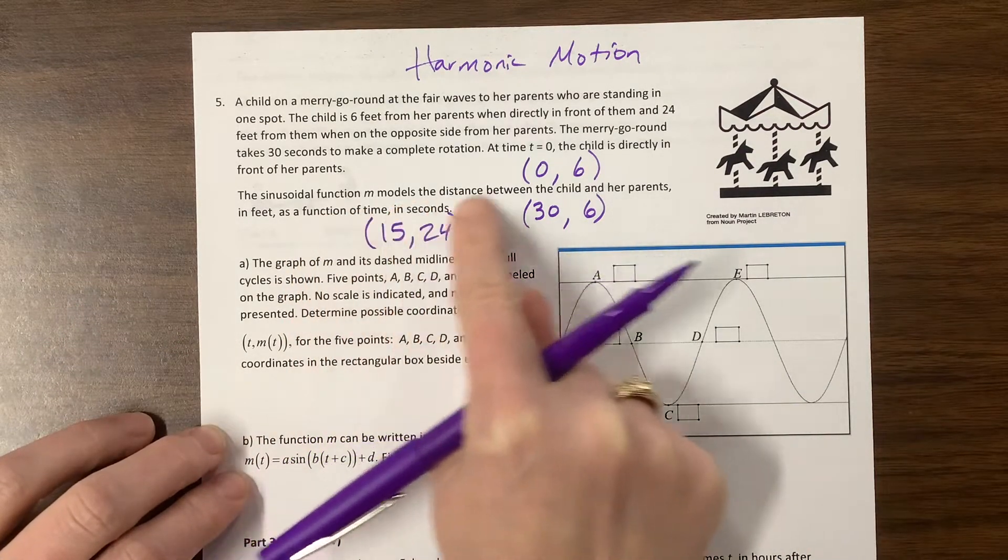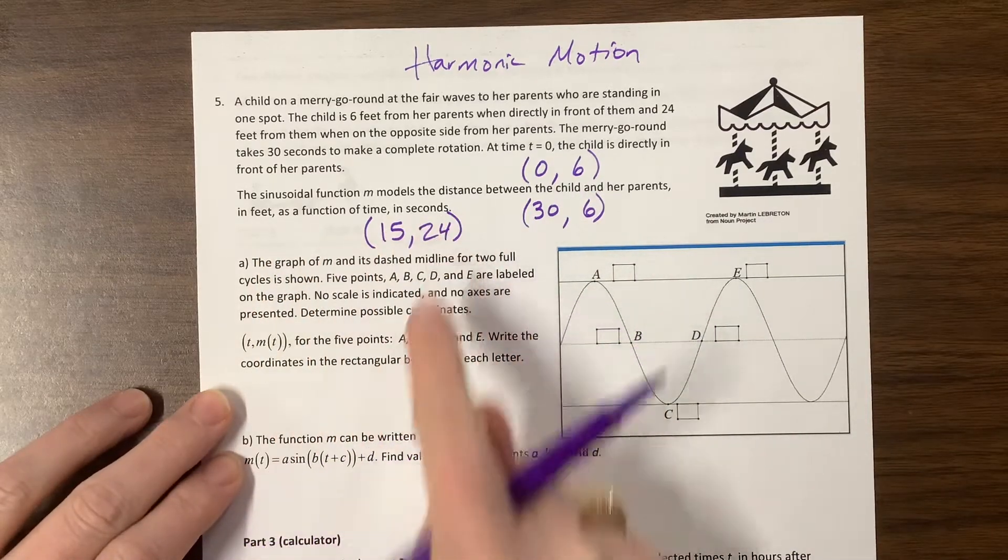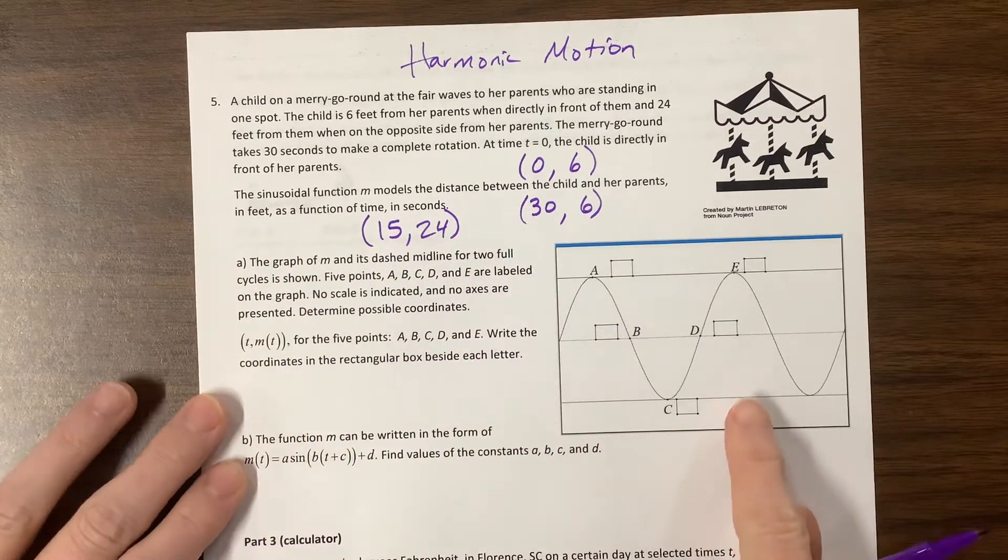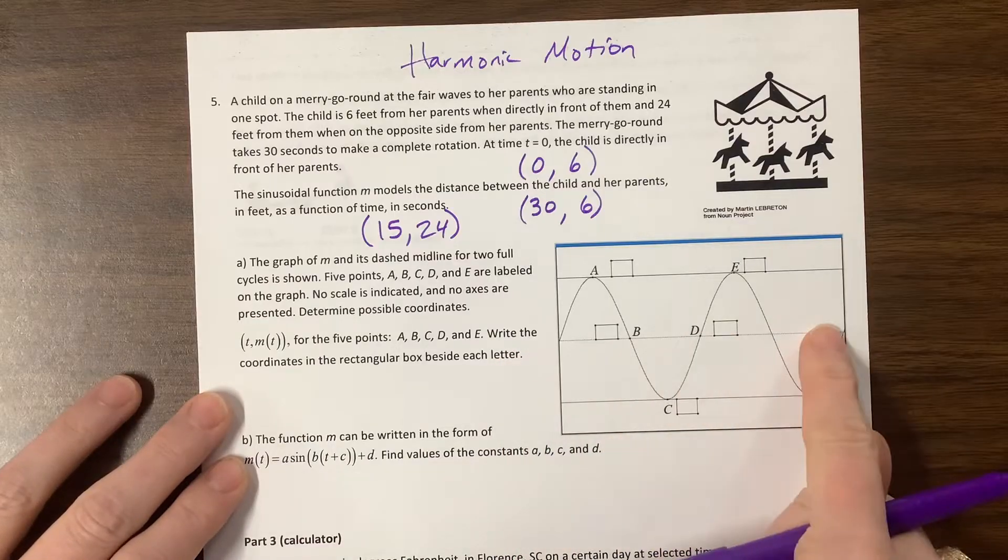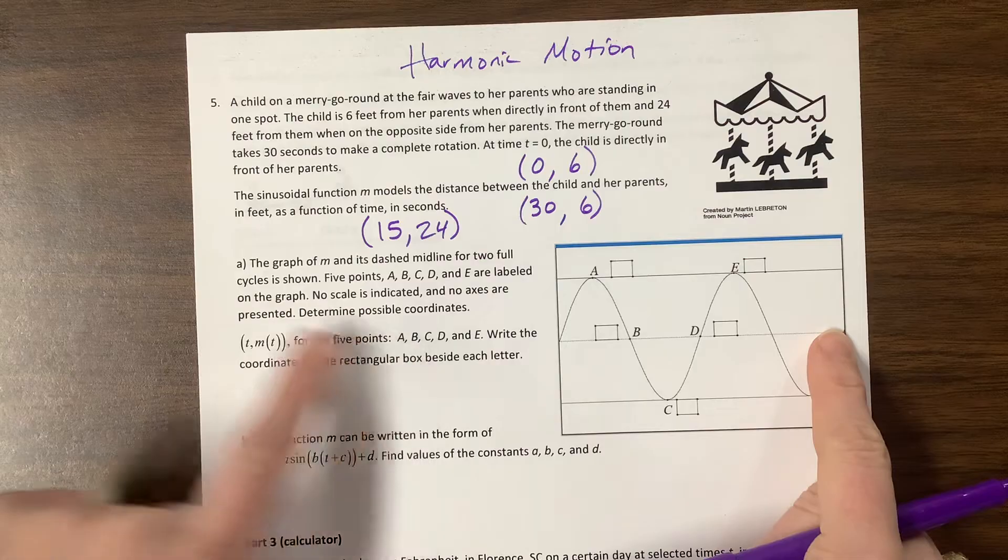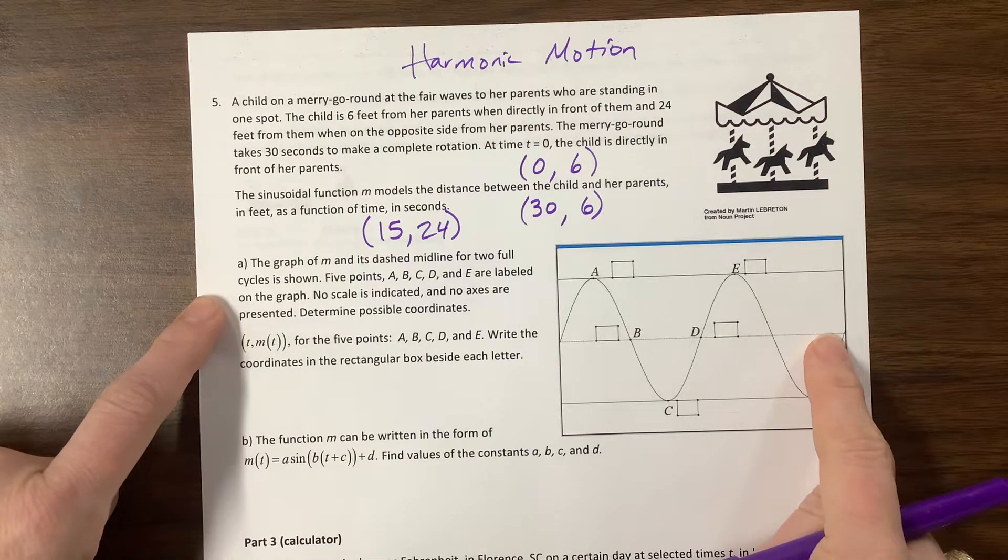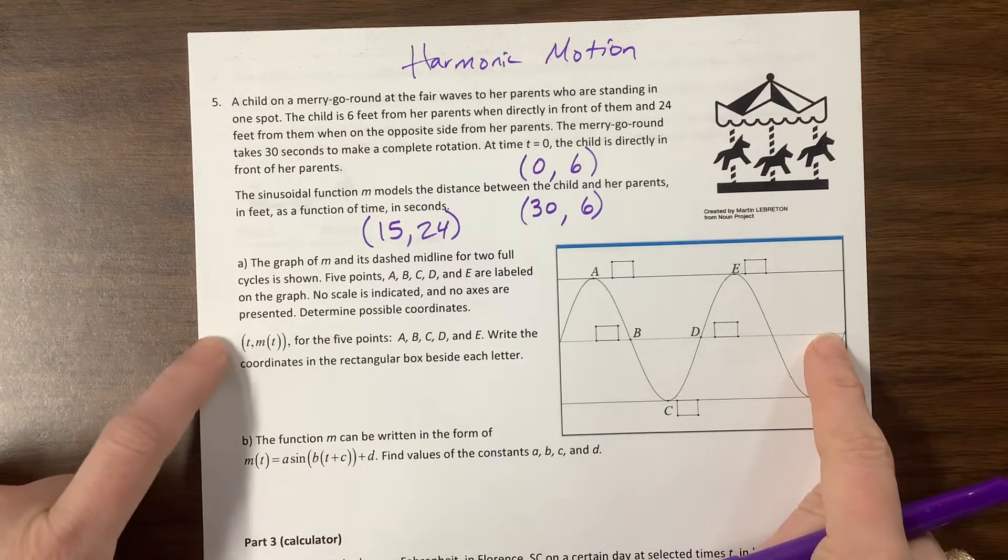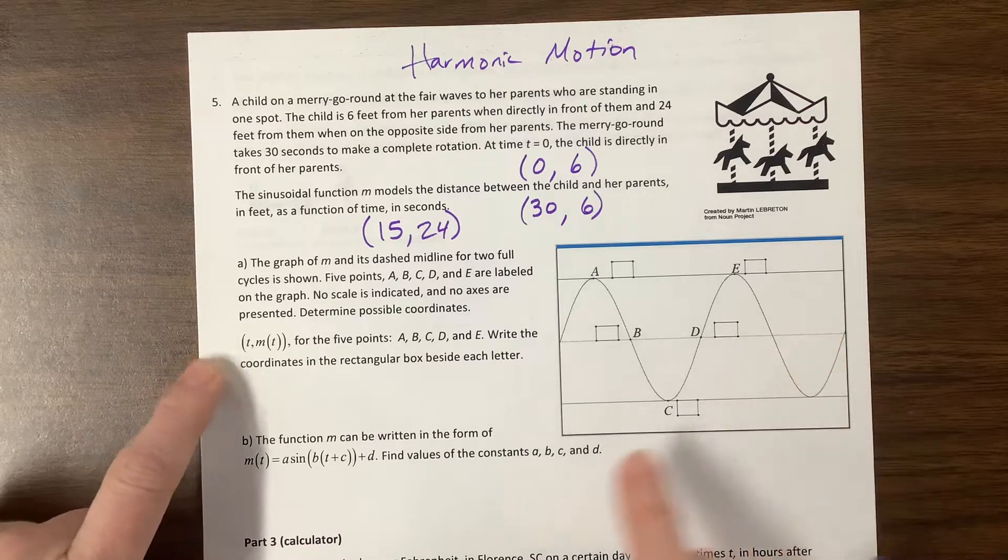When she's halfway through the time, so at time 15, she would be 24 feet away. So halfway through this time that it takes to go around the merry-go-round, she is as far from her parents as she'll ever be on the merry-go-round. The sinusoidal function m models the distance between the child and her parents in feet as a function of time in seconds.